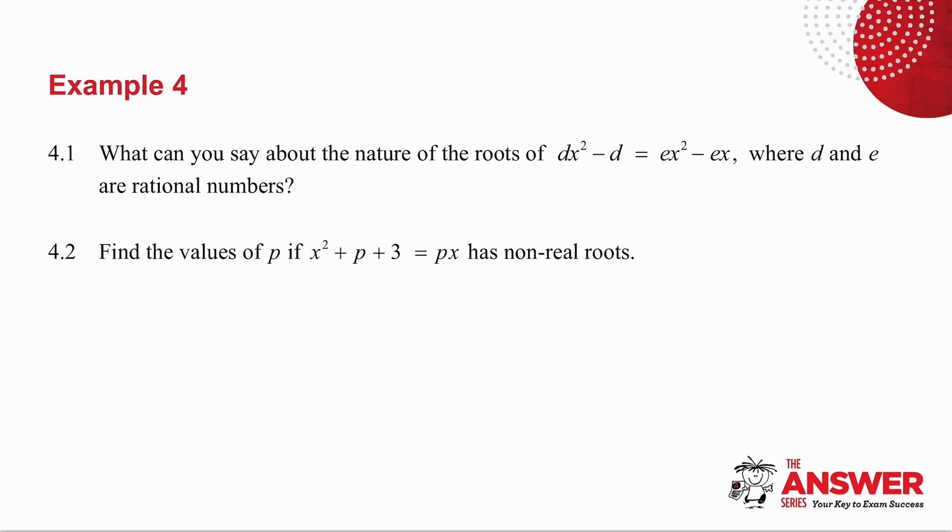So don't think of what happens if d and e are different numbers, what happens if they're non-real, what happens if they're irrational. So just do your calculation. The d and e being rational numbers are there just to make it mathematically correct. And 4.2 says, find the values of p if this equation has non-real roots. So I want you to pause the video, I want you to try these two, and then we'll look at them together.